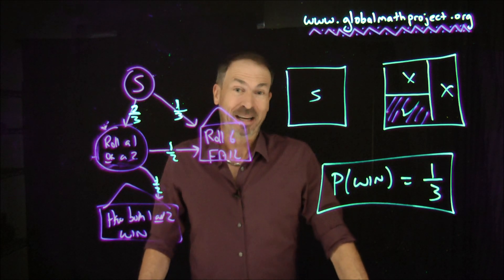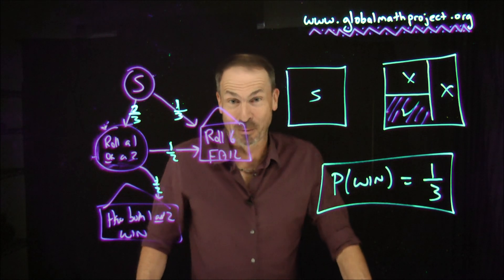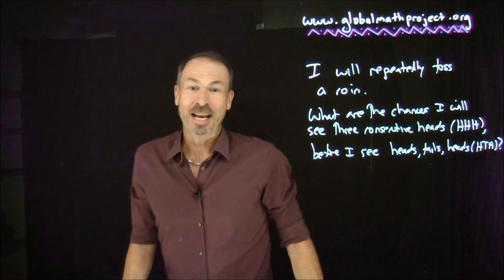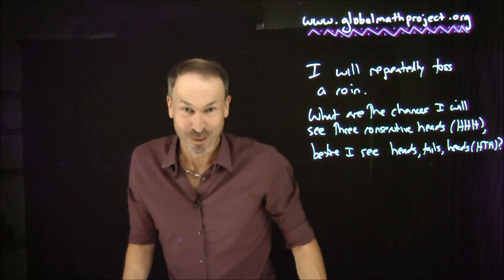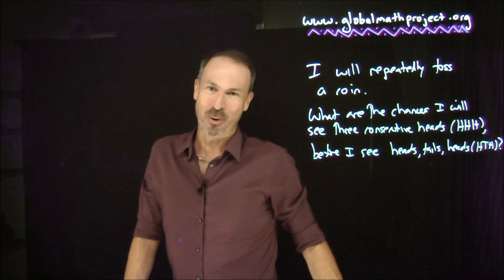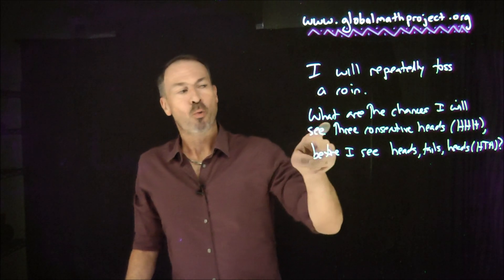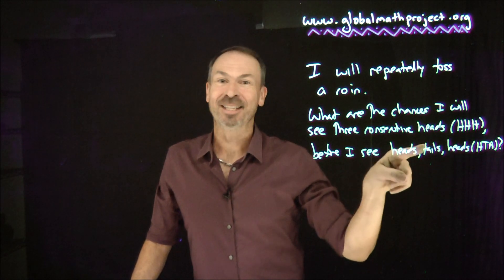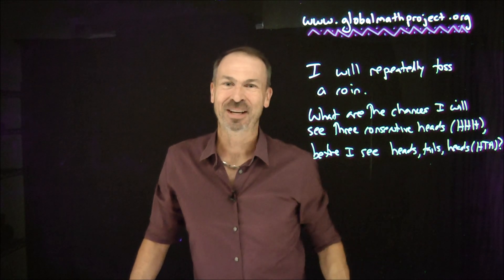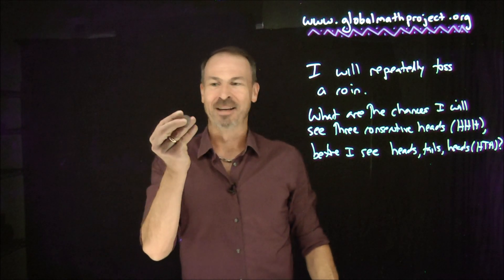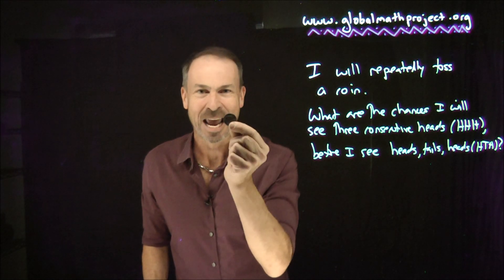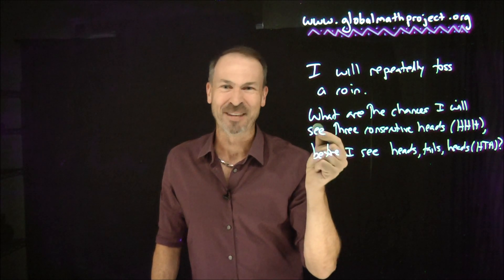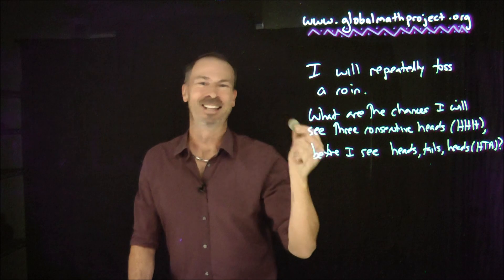In fact, let me end off this video by cleaning the board and giving you one more problem for you to try for yourself. This is really cool stuff. Here's another potentially infinite process. I will repeatedly toss a coin. But this time, I'm asking, what are the chances I will see three consecutive heads, head, head, head, before I see heads, tails, heads, HTH? What are the chances in flipping this coin over and over again that I will first come across head, head, head before I ever see head, tail, head? Can you work it out? Try drawing a garden path system for this one and see what you can do with it. Loads of fun.